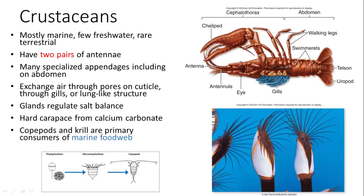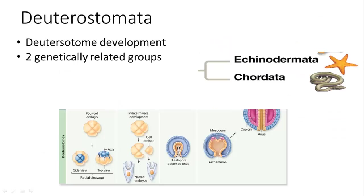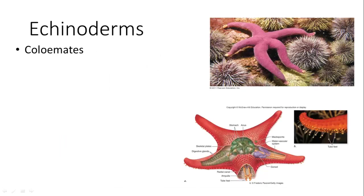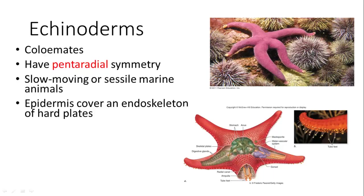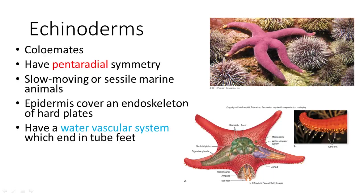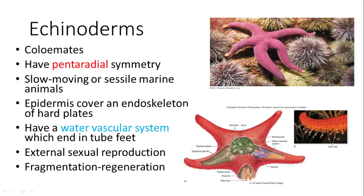Now we move on to deuterostomes — the two groups are echinoderms and chordates. Echinoderms are coelomates with pentaradial symmetry; they're slow-moving but many are predators. Their epidermis contains hard plates, and they have a water vascular system with tube feet for movement. They reproduce sexually via broadcast spawning, but can also fragment their bodies and regenerate — each arm, as long as it has a piece of the central disc, can form a new individual.